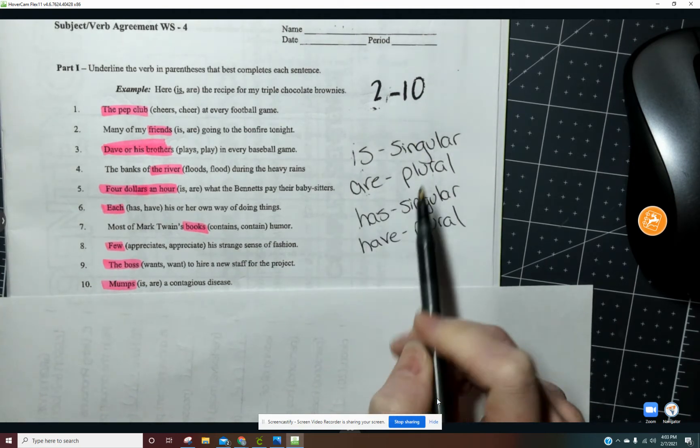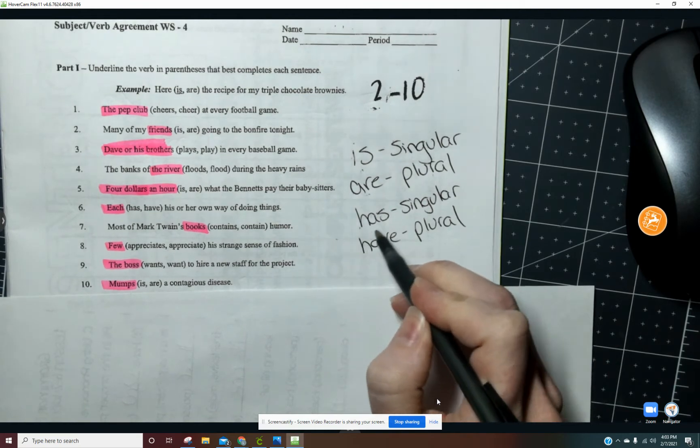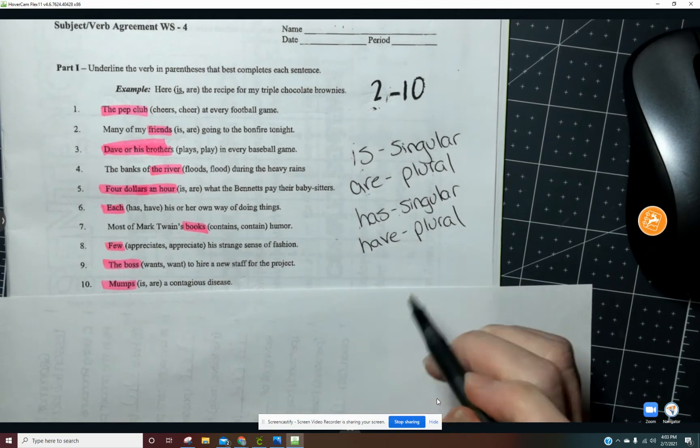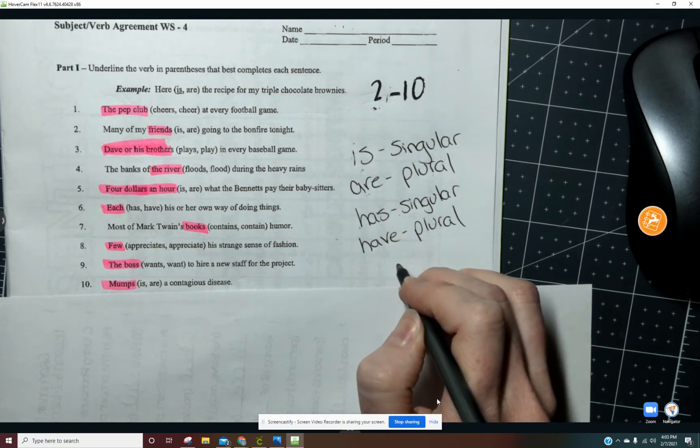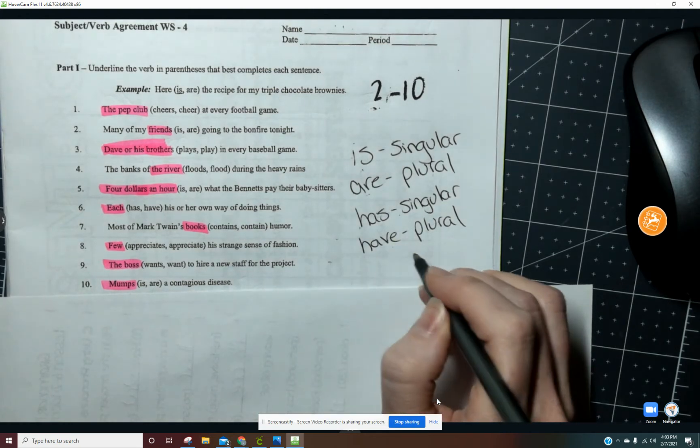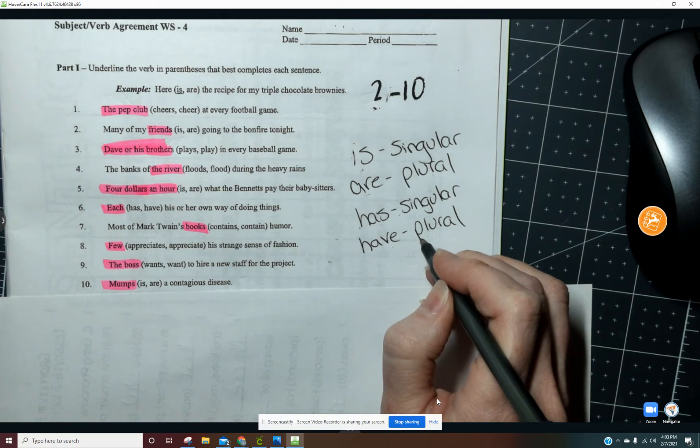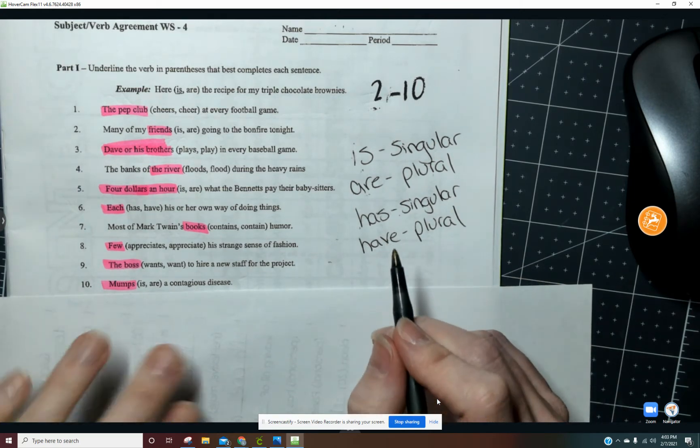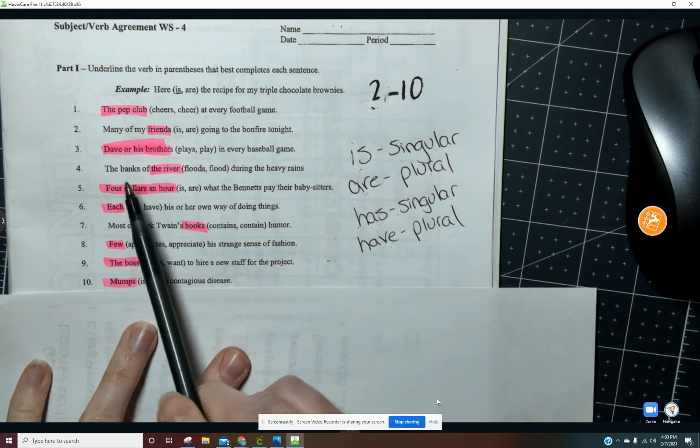Okay, down here. He has a pencil. Singular, has is singular. And then we have pencils. So have is plural. So we'll look at some specific examples there.